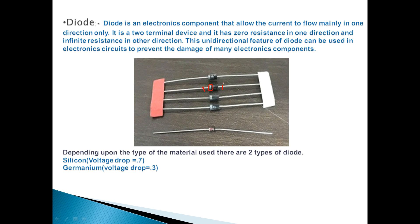The cathode is the negative terminal of the diode. When we apply voltage across the diode, if we connect the anode to the positive terminal of the battery and the cathode to the negative terminal of the battery, then our diode is in forward bias. In the other direction, if we reverse the connections, then our diode will be in reverse bias. In that case, our resistance will be maximum and it will not allow current to flow.